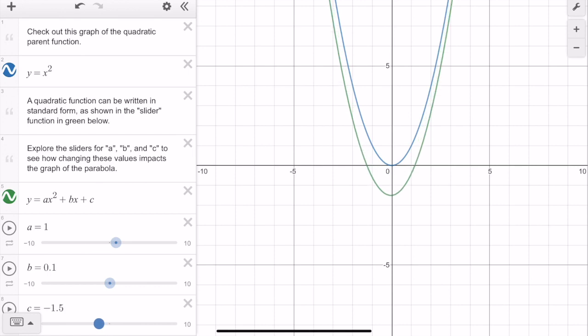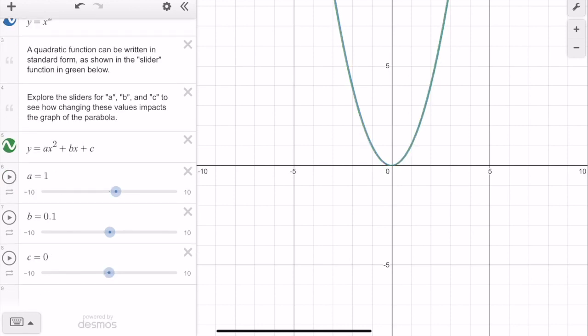Notice that if I move C though, if C is negative, we're going down, but if I go in the positive direction, C is going up. So notice that C affects the direction that goes up and down, whereas B changes it left to right.